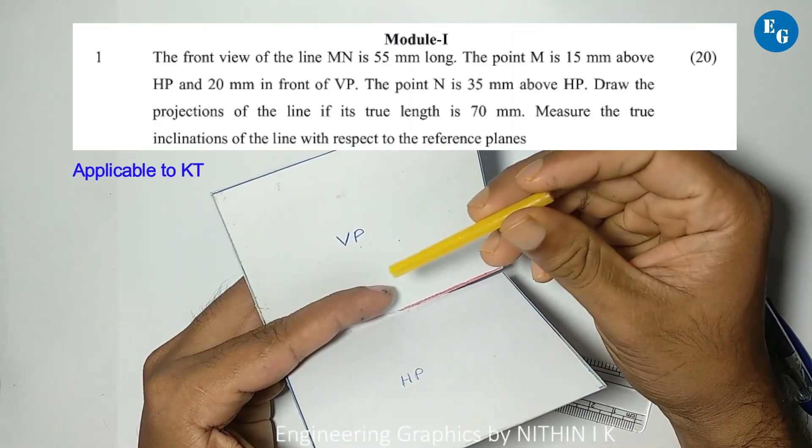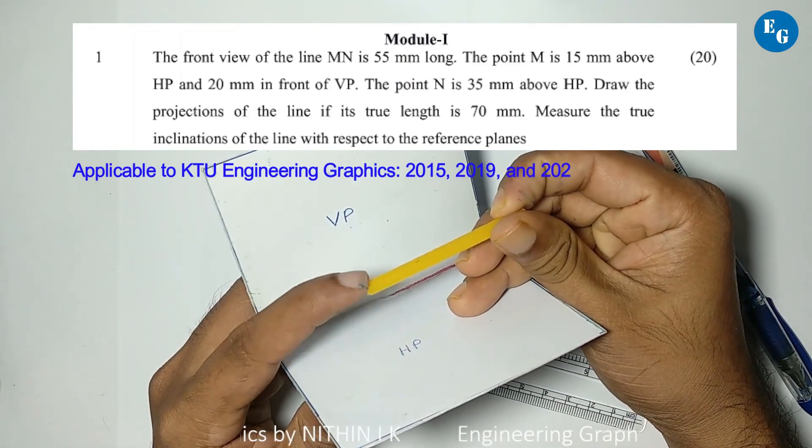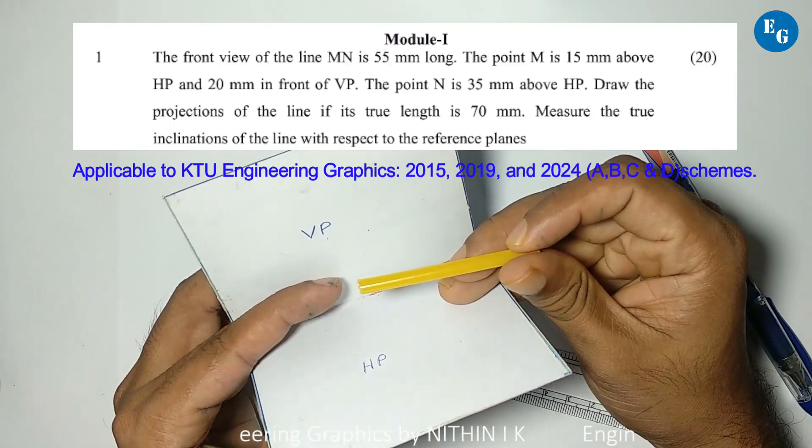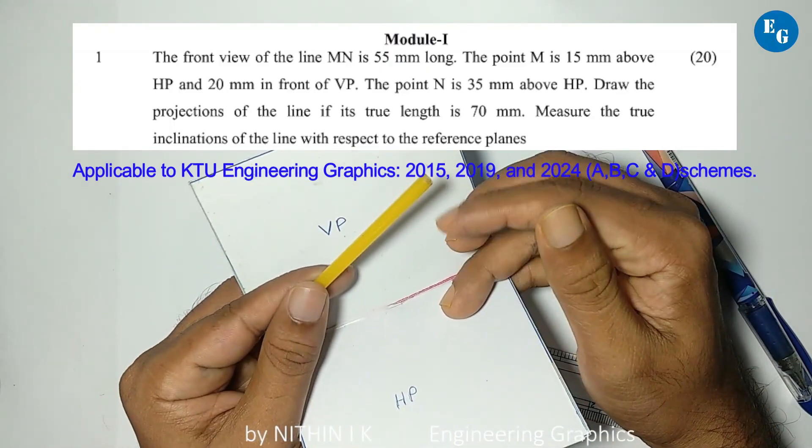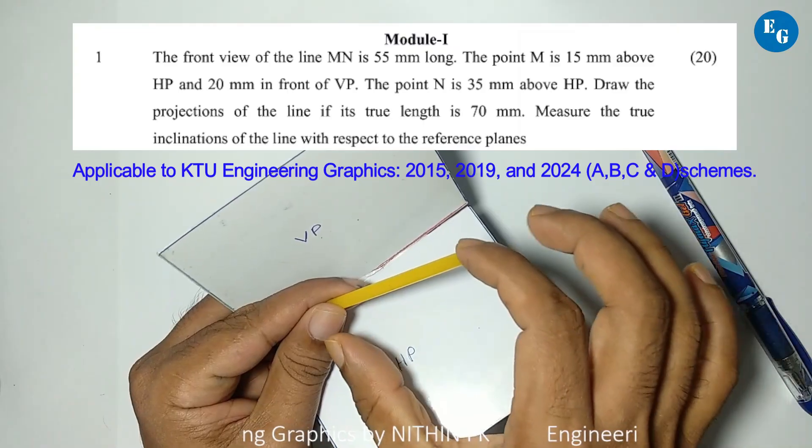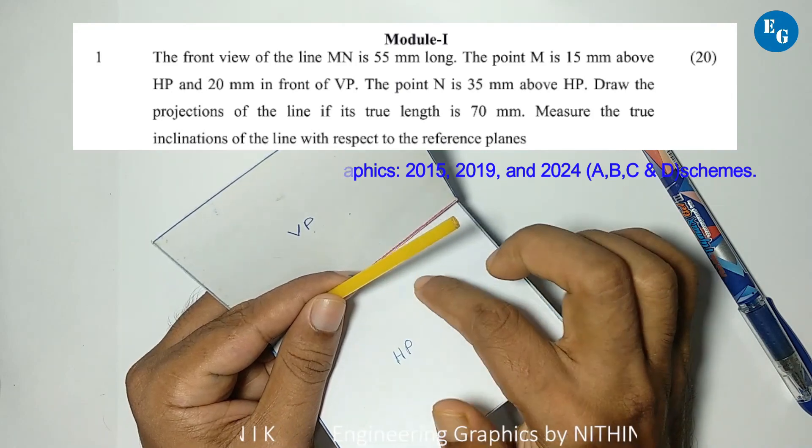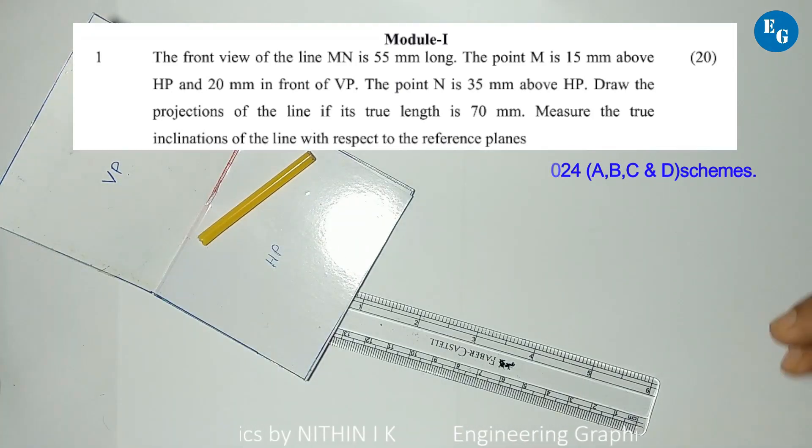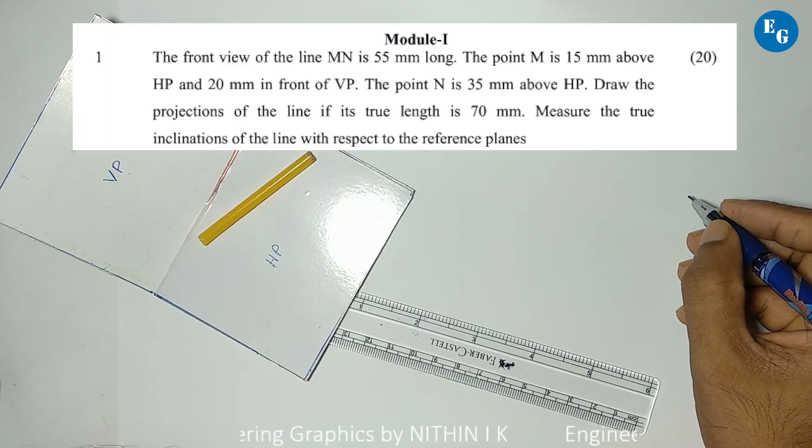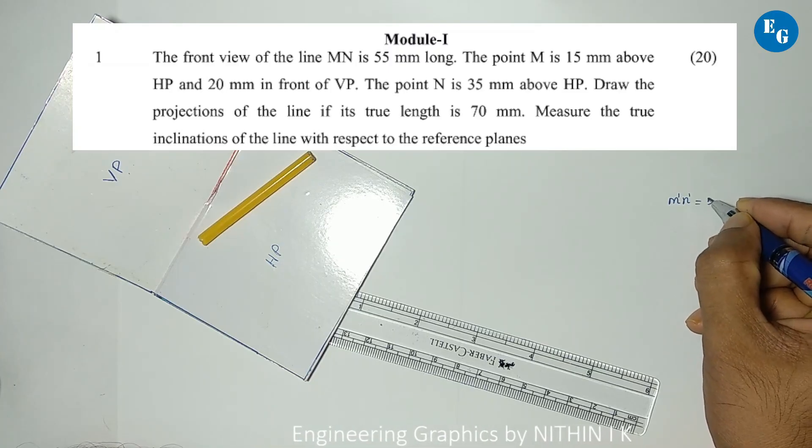The front view of the line MN is 55mm long. The point M is 15mm above HP and 20mm in front of VP. The point N is 35mm above HP. Draw the projections of the line if the true length is 70mm. Measure the true inclination of the line with respect to reference planes. This is projection of lines, module number 1. The front view M dash N dash equals 55mm.